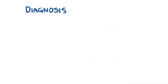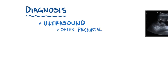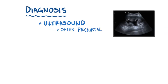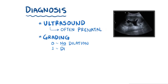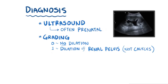Hydronephrosis is usually diagnosed with ultrasound, often prenatal ultrasound, meaning during pregnancy. Hydronephrosis is given a grade based on severity, from 0 to 4. Grade 0 means there is no dilation. Grade 1 is when there is dilation of the renal pelvis, but the calyces remain normal.